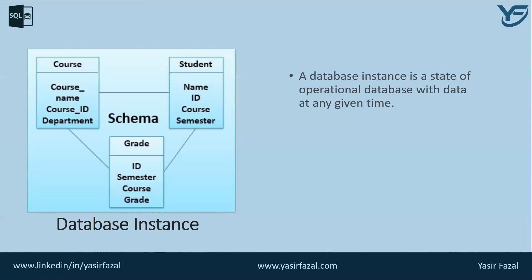Whereas when I talk about the database instance, it means the course table will contain actual information within its columns. For example, there shall be many courses like Maths, English, Biology, Physics, and Chemistry. So these are course names and this is the data — this is the data that will be captured by any database instance.